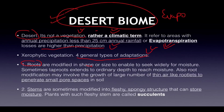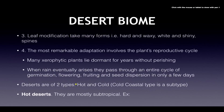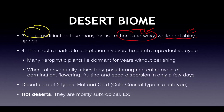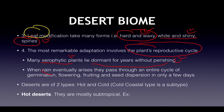There are four general types of desert adaptation. Roots can be modified in shape or size — deep tap roots or thin rootlets to penetrate small pores. Stems like cactus are fleshy and spongy, storing water — these are called succulents. Leaves can be very waxy and hard with no stomata, or white and shiny to reflect sunlight, or modified into spines. Finally, xerophytic plants lie dormant for years and when rain arrives, they complete an entire cycle of germination, flowering, fruiting, and seed dispersal in only a few days.